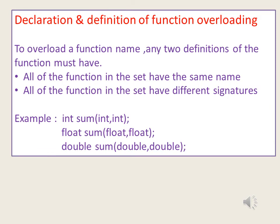Let us discuss the declaration and definition of function overloading. To overload a function name, any two definitions of the function must satisfy: all functions in the set have the same name, and all functions in the set have different signatures — that is, a different number of arguments or different types of arguments. C++ can distinguish overloaded functions by the number and type of arguments.